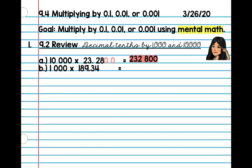Try letter B one more time. Okay, so we have three zeros. Alright, so we're going to count one, two, three. Our answer is 189,340. Alright, so great job with reviewing.